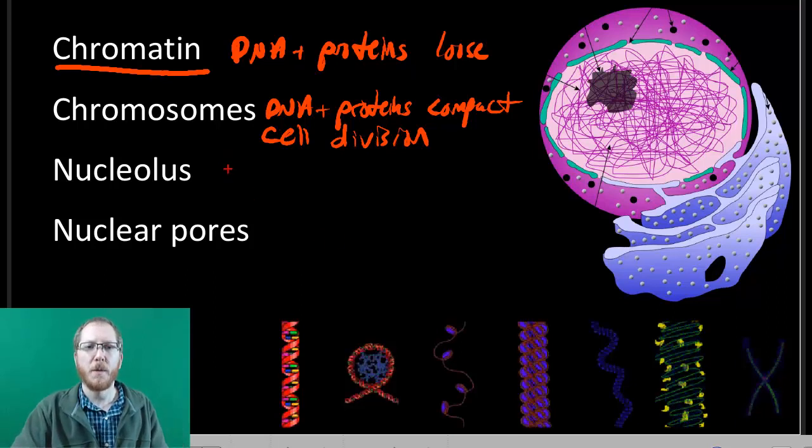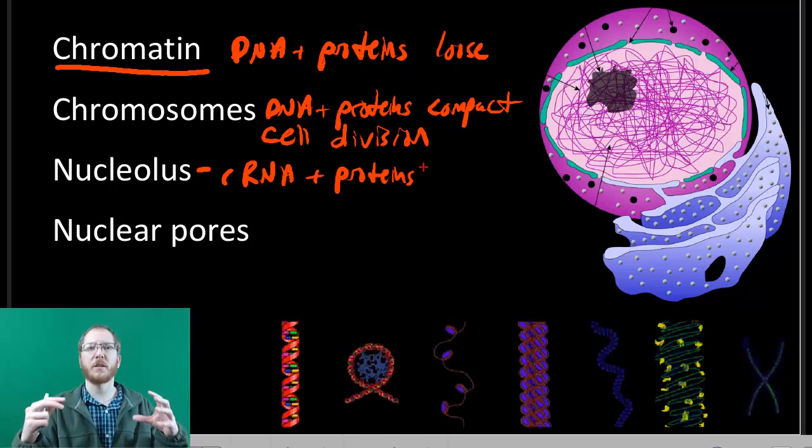The nucleolus I want to bring up because ribosomes, which we've mentioned before, we'll mention later as well, are going to be made from something called rRNA, that's ribosomal RNA, plus some proteins. And so these guys will be kind of assembled and stuck together, at least in these smaller chunks called subunits, at the nucleolus before they leave.